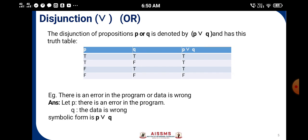Disjunction (OR): The disjunction of propositions p or q is denoted by p ∨ q and has this truth table: p has T, T, F, F, and q has T, F, T, F. When we have either of p or q as T, we get p ∨ q as T, otherwise F.